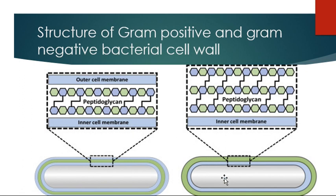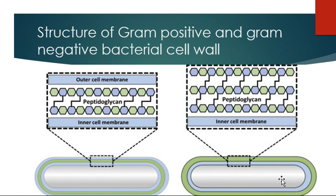When bacteria multiply, antibiotics work properly. Some antibiotics are bactericidal — like vancomycin, cephalosporin, penicillin, and metronidazole — they kill bacteria. Already-formed bacteria are not properly destroyed by antibiotics, but when bacteria multiply into daughter cells, those daughter bacteria have no proper cell wall, so the antibiotic works effectively. Multiplication leads to thin or loose bacterial cell wall, so the antibiotic can work easily on newly formed bacteria.